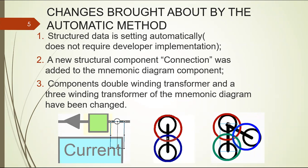And the last change is components, double-winding transformer and three-winding transformer have been changed. When mnemonic diagram components were transferred from manual to automatic data preparation, the double-winding transformer and three-winding transformer components had a problem with assigning a number to the transformer nodes and assigning the index to the transformer branches. This issue has been fixed by adding transformer nodes and transformer branches inside transformer component copies.